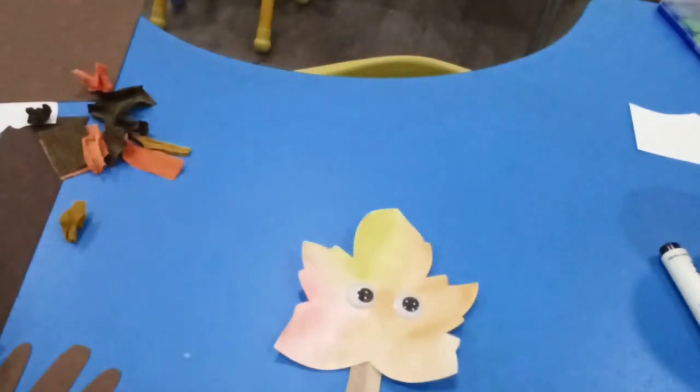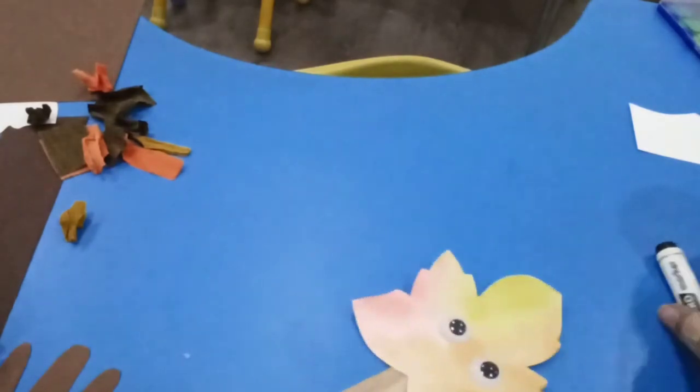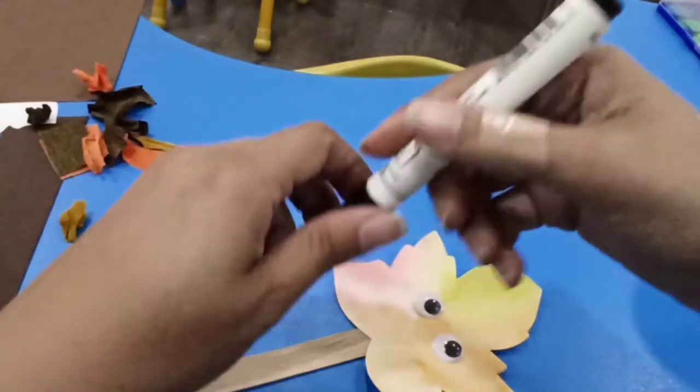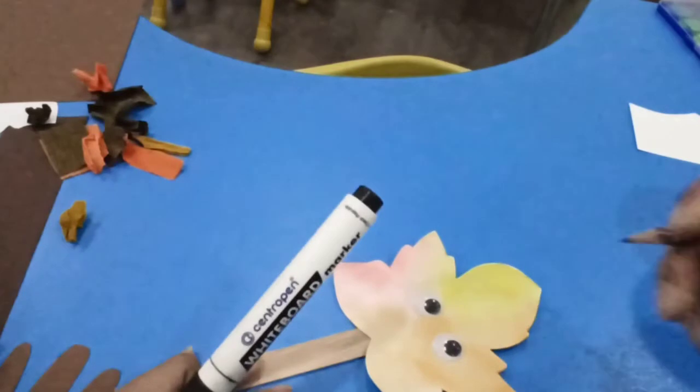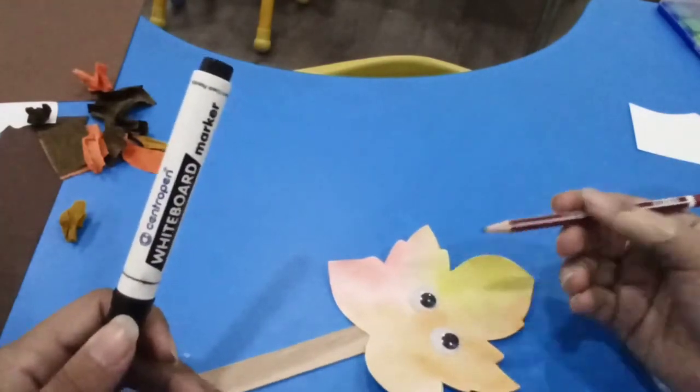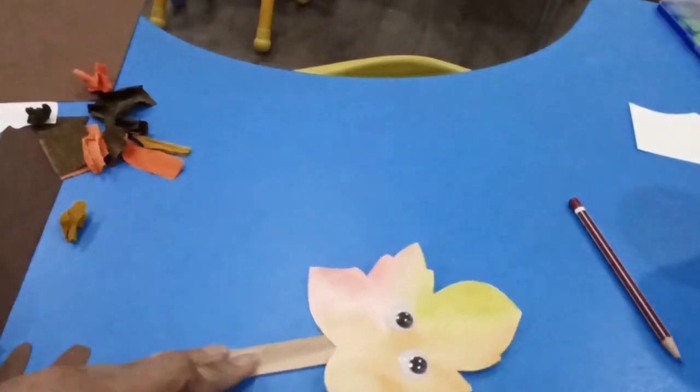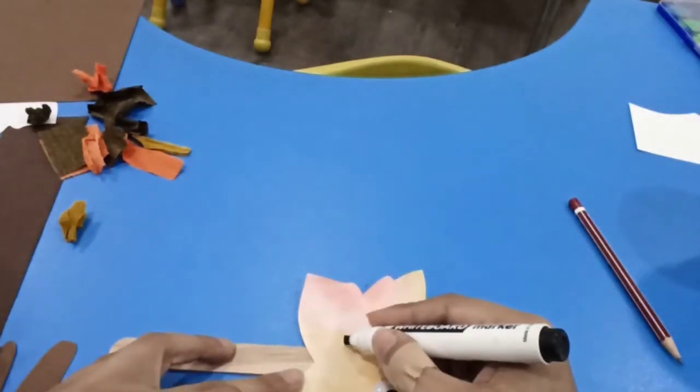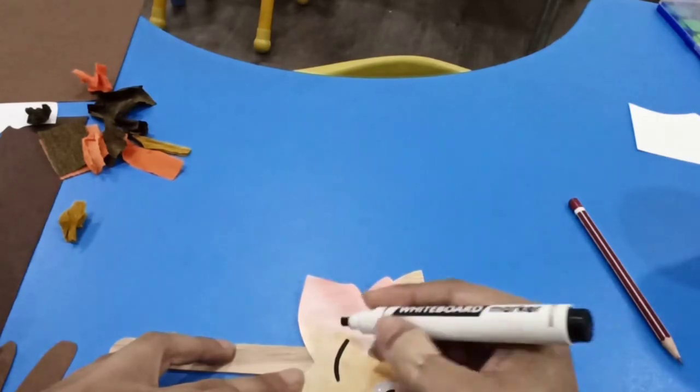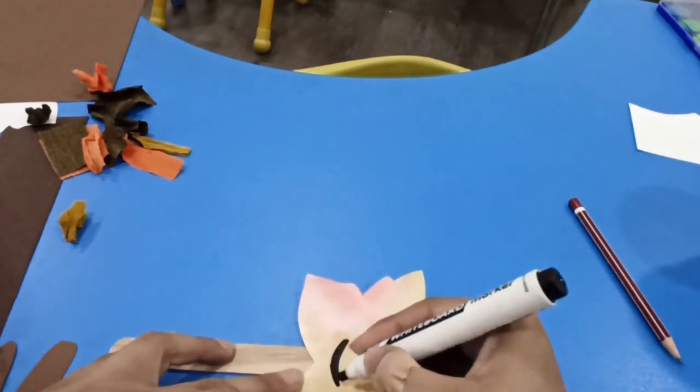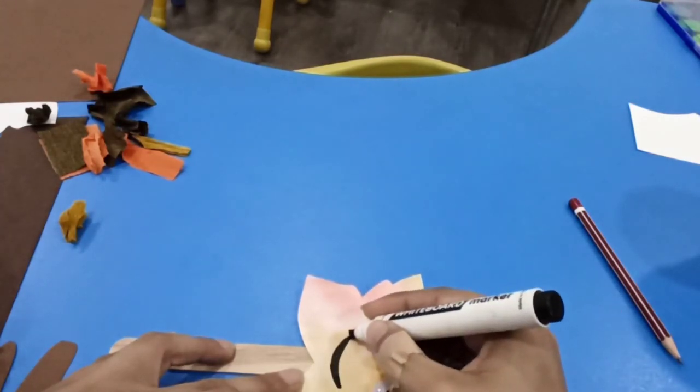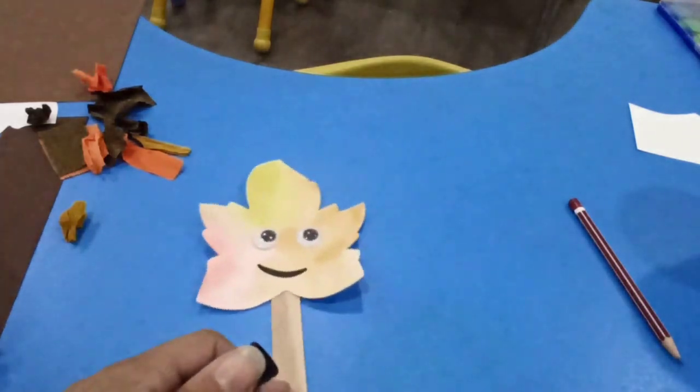And then we're going to do a smile with marker. Or you can do first with a pencil, so if you have a mistake you can erase it and then trace it with the marker. And that is it.